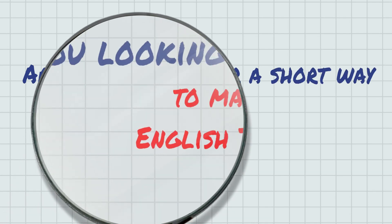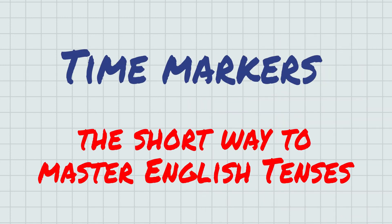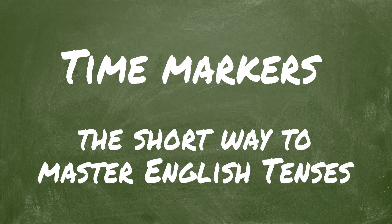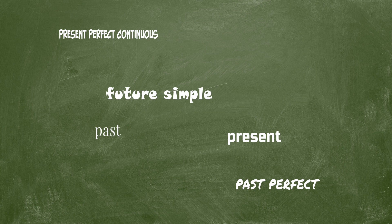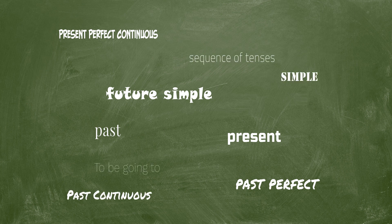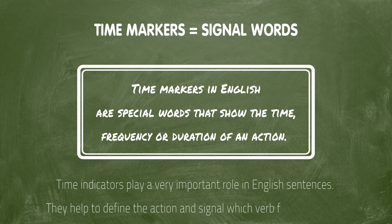Are you looking for a short way to master English tenses? Time markers — the short way to master English tenses. All students learn the construction schemes for each of the 12 English tenses, but this alone isn't enough to avoid mistakes. Luckily, there are words that can signal which is the best tense to use. Time markers in English are special words that show the time, frequency, or duration of an action. They help us to define the action and signal which verb form to choose.